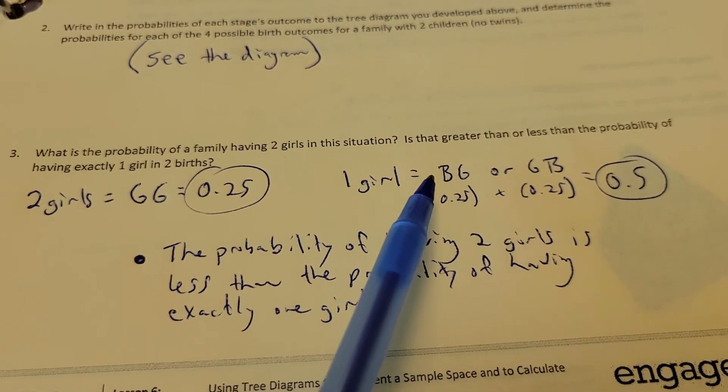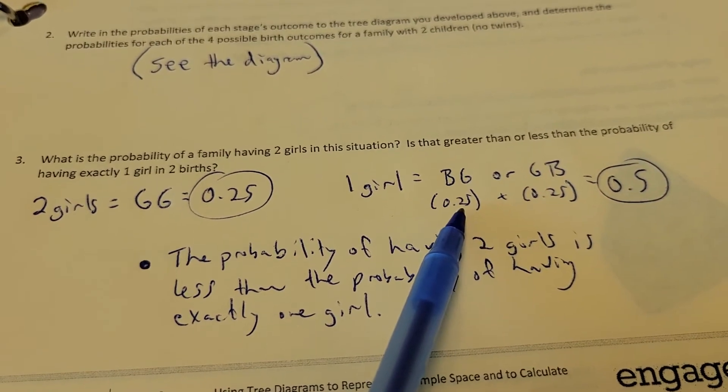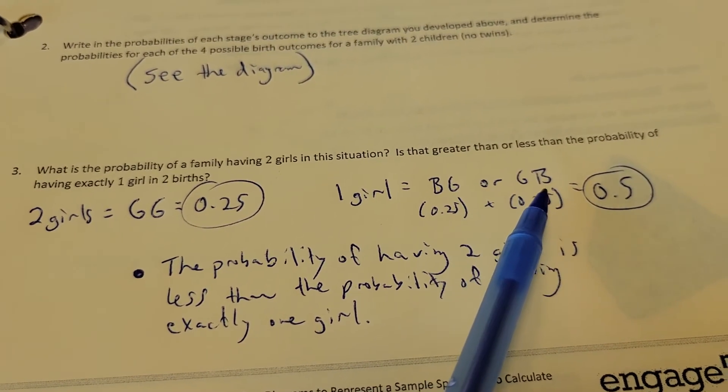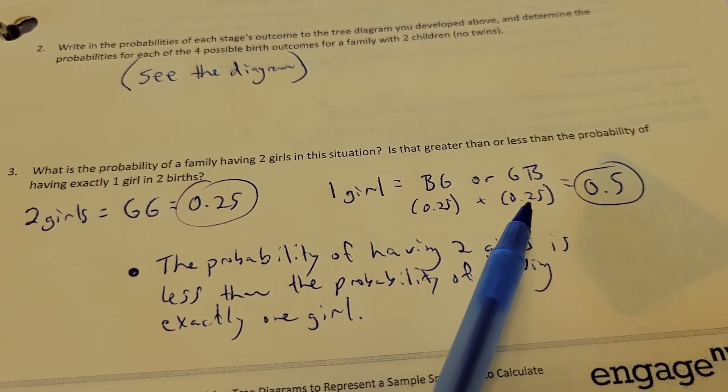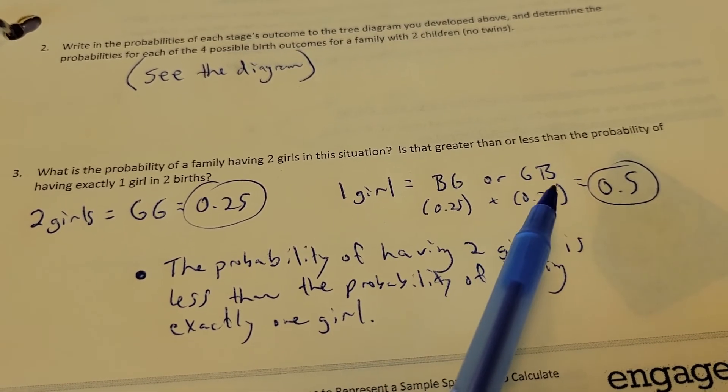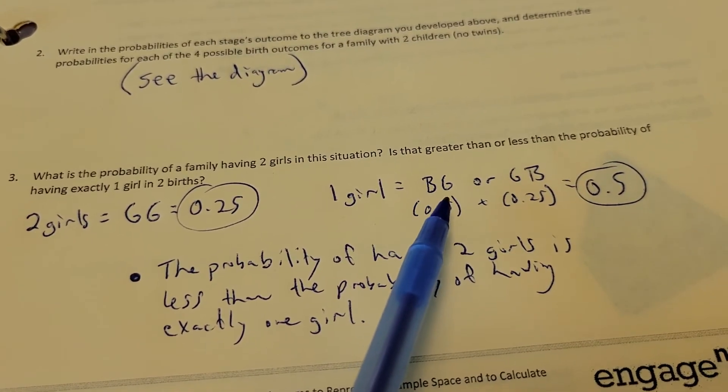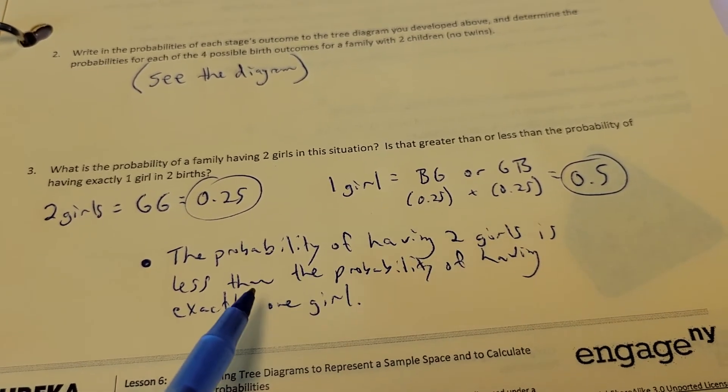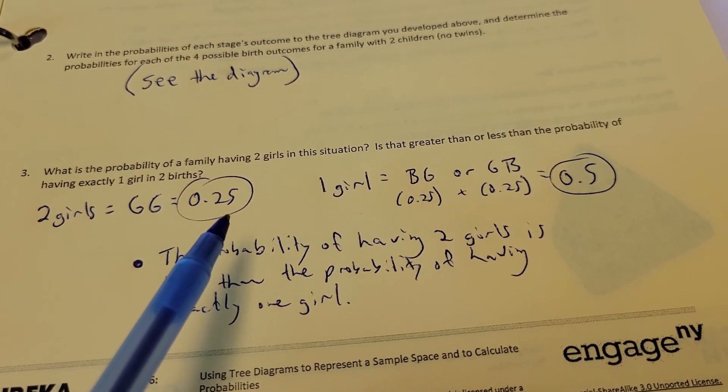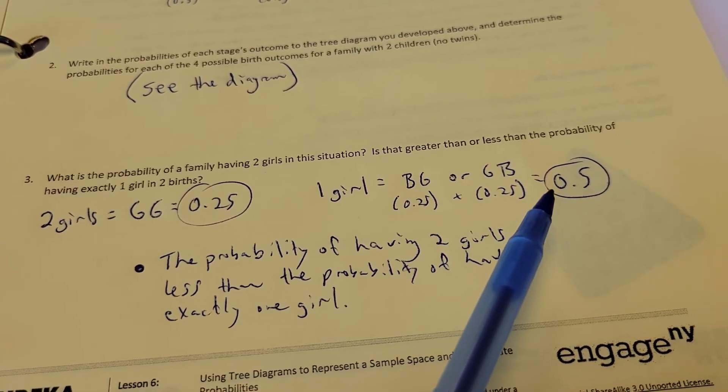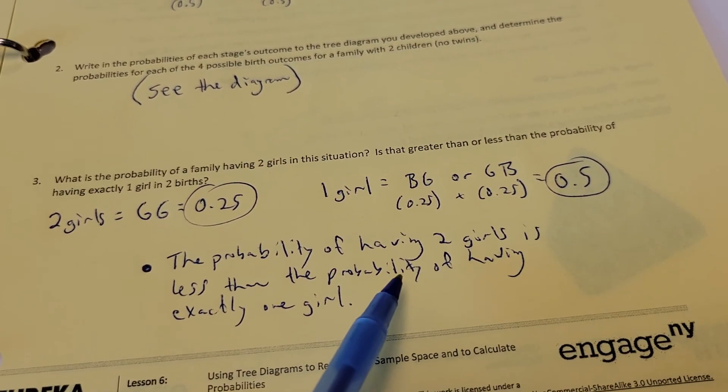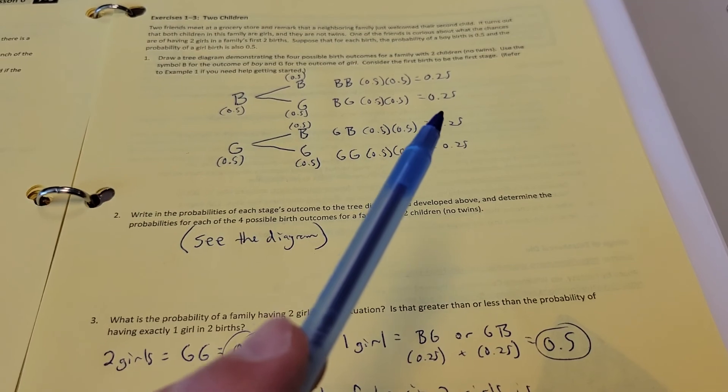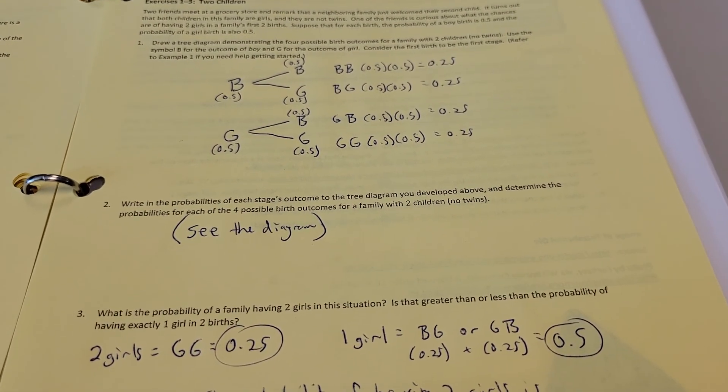Well, one girl. Boy then a girl, that's one girl, 0.25. Girl first then a boy, that's exactly one girl, 0.25. Together, I'd have to add those totals because there's a couple different categories that have one girl, 0.5. So the probability of having two girls is less because there's only a 25% chance of happening than having exactly one because you get a 50% chance of that happening. Based off our data, that's our results.